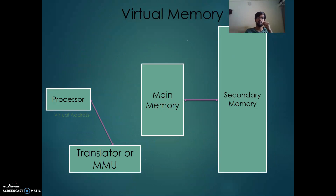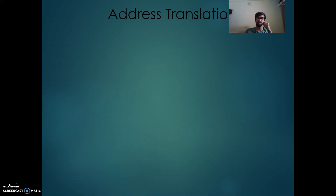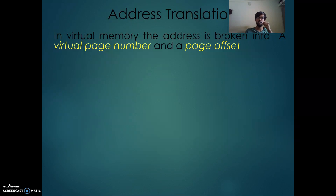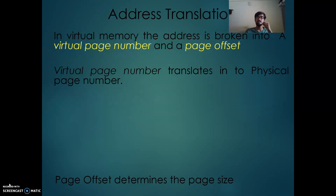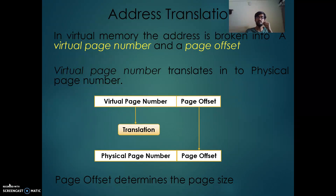The MMU, or Memory Management Unit, is the translator that translates virtual addresses into physical addresses. If it is a page hit there is no problem — the processor can fetch the memory page from main memory. But if it is a page miss it needs to get the page from secondary memory, which takes millions of clock cycles. The virtual memory address has two blocks: the virtual page number and the page offset. The virtual page number translates into the physical page number, and the page offset represents the page size.